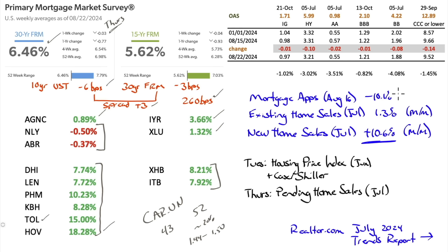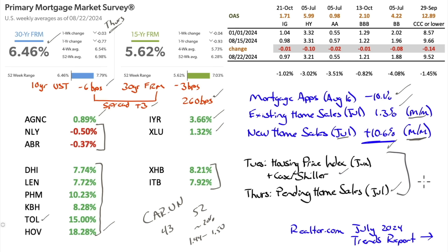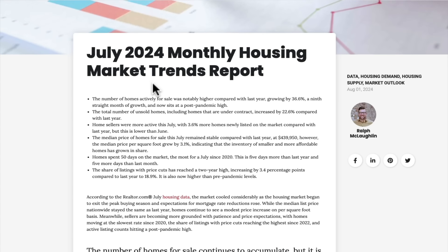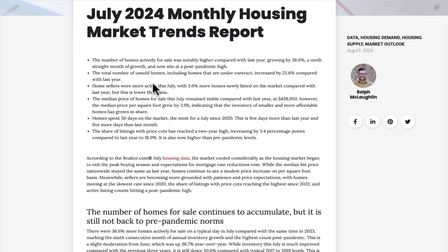Mortgage apps down 10.1% for the week ending August 16th. Existing home sales for July up 1.3% month-over-month. And this is big: new home sales for July up 10.6% month-over-month — some big numbers. Tuesday we'll get the housing price index for June along with Case-Shiller, and Thursday pending home sales. Overall, these aren't big risk events for the housing market. Let's look at the realtor.com July 2024 monthly housing market trends report.